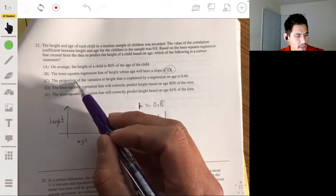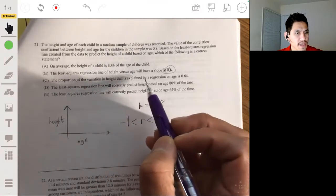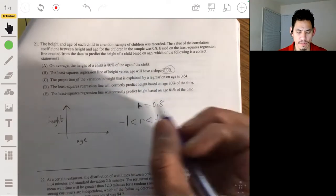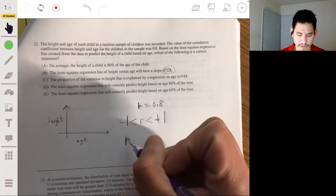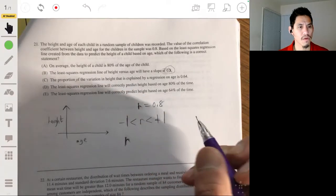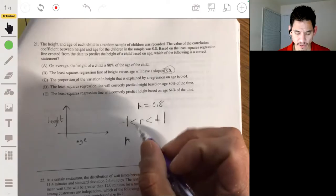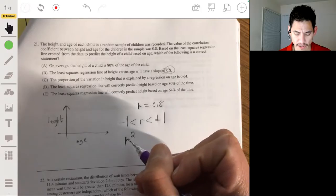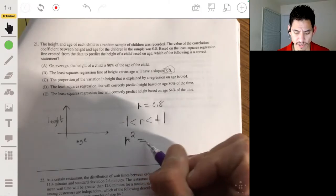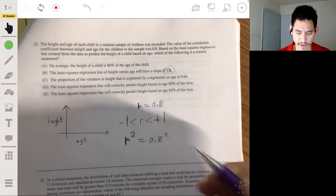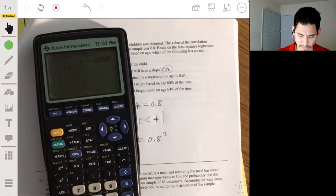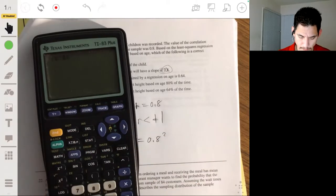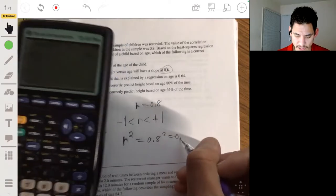The C, the proportion of the variation in height that is explained by the regression on age is 0.64. Okay, so remember the coefficient of determination or R squared or the square root of R. So R squared is a coefficient of determination, which is going to be 0.8 squared, which will be 0.64, if I did my math right. So the coefficient of determination is 0.64.